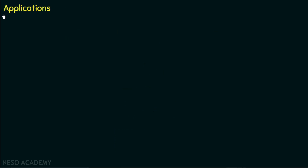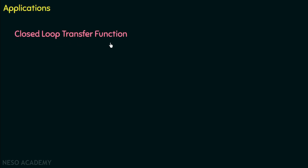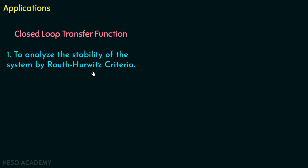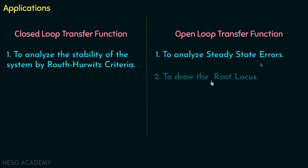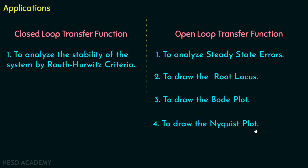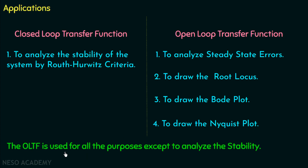Now we are done with the transfer function of a closed loop system, including the closed loop transfer function and the open loop transfer function. We use the closed loop transfer function to analyze the stability of the system using the RH criteria. Whereas we use the open loop transfer function to analyze steady state errors, to draw the root locus, to draw the Bode plot, and to draw the Nyquist plot. The open loop transfer function is used for all purposes except analyzing stability by using the RH criteria. We will discuss these topics in detail in their respective chapters.